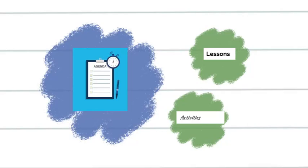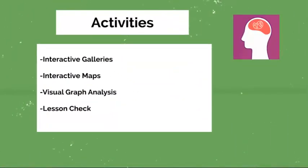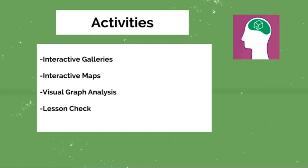Let's take a quick look at the types of activities we'll be doing: interactive maps, visual graph analysis, lesson checks, and interactive galleries. We'll also probably be engaging in some role play for the Aztecs and Mayans, especially when it comes to essential vocabulary words on Savas. We'll likely role play to compare and contrast the two civilizations and the accomplishments both groups produced or impacted society through.